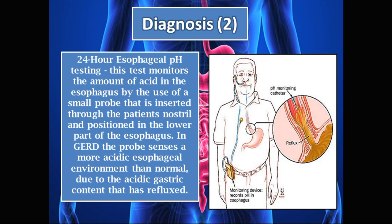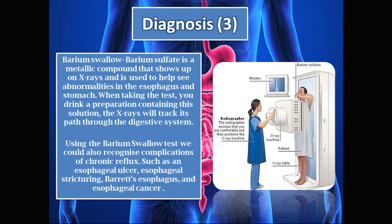We can also diagnose GERD using a barium swallow. Barium sulfate is a metallic compound that shows up on x-rays and is used to identify abnormalities in the esophagus and stomach. When taking the test, the patient drinks a preparation containing the solution, and x-rays track its path through the digestive system. The barium swallow can also identify complications of chronic GERD such as esophageal ulcers, stricturing, Barrett's esophagus, and esophageal cancer.